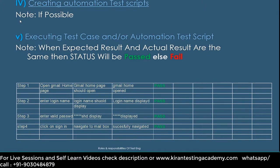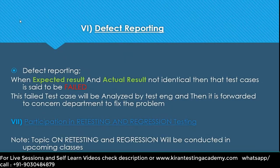If a test case is failed, you report it to the developer — report the defect. The developer will fix it and send it back to you. On that, you need to perform retesting and regression testing. If everything is fine, you can close it. All these topics — requirements analysis, writing test scenarios, writing test cases, executing them, reporting defects, and closing bugs — will be covered practically in this course.